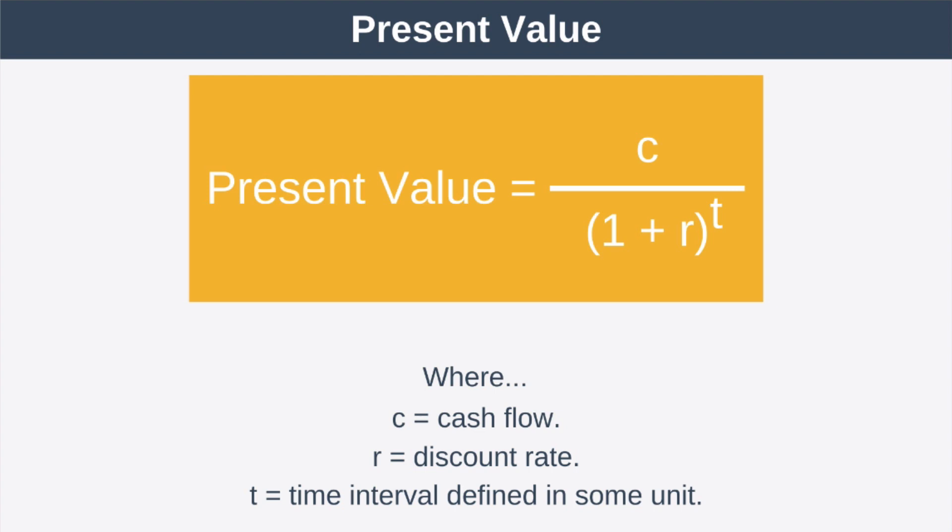So first let's take a look at the present value formula, and this is the formula that calculates the present value of a single cash flow that you receive in the future. Now I'm going to say that again, it computes the value of just one single future cash flow. And the variables in this equation are c, which stands for a cash flow in the future, r is the discount rate, and t is the time interval defined in some unit of your choosing. So for example you could choose years, in which case zero is year zero, one becomes year one, two becomes year two, etc.